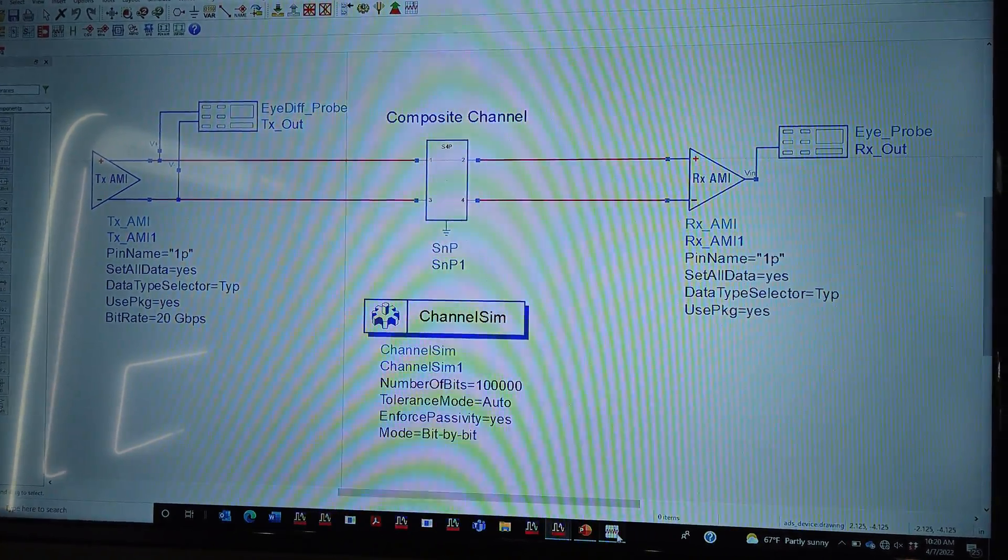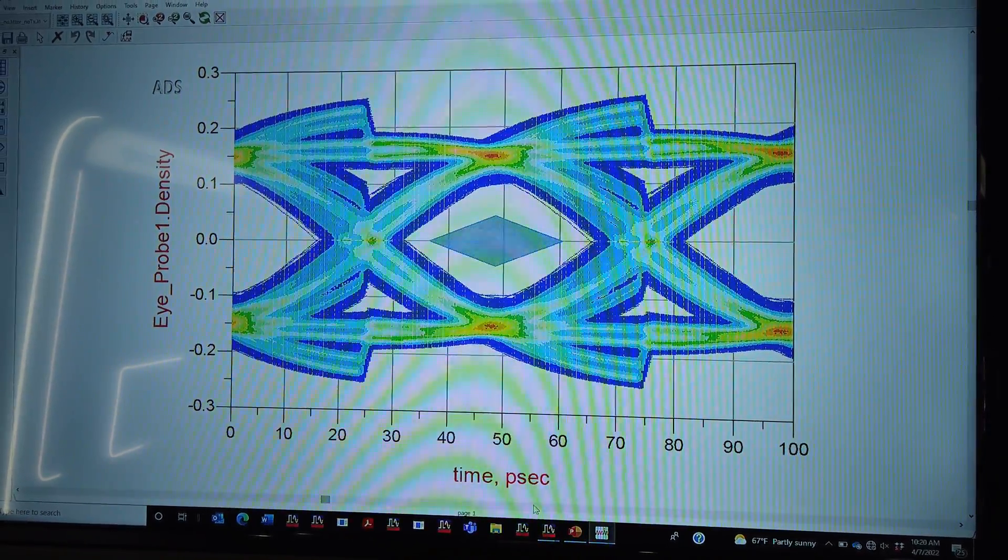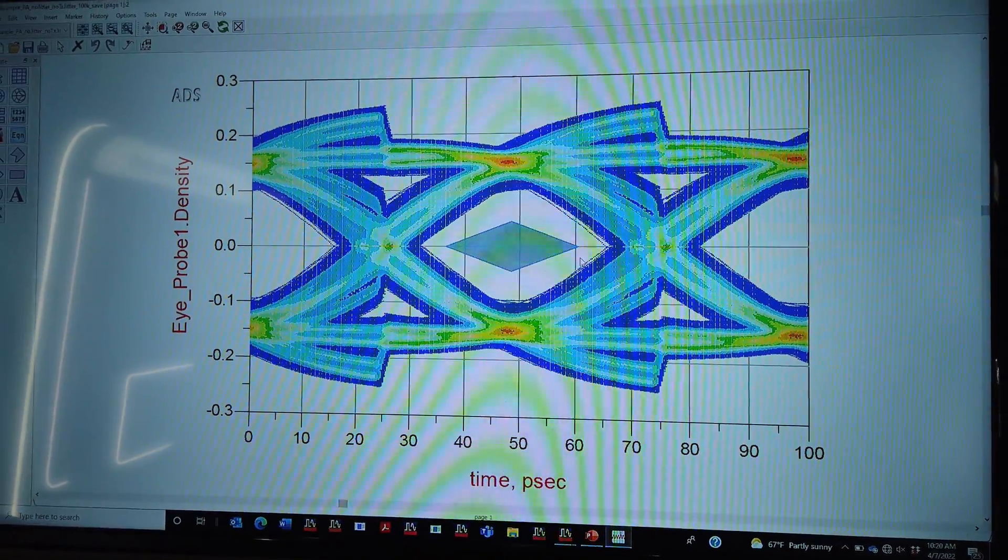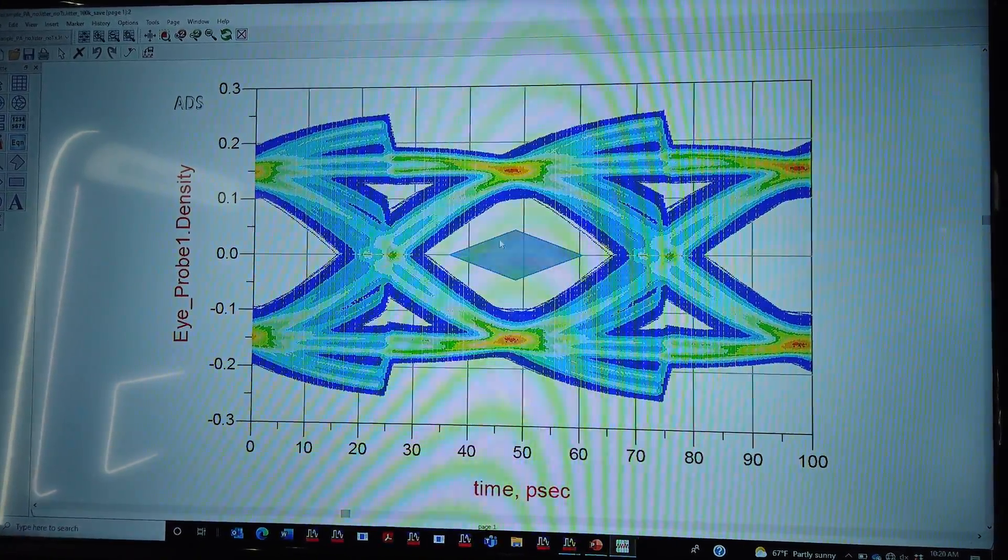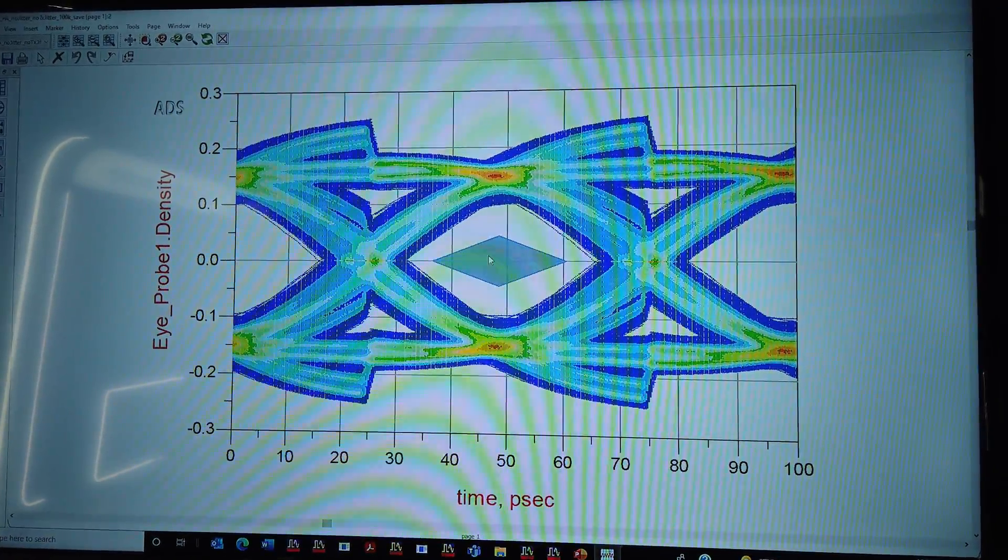And after we complete the simulation, what we're actually getting is an eye that clearly matches the spec. I've superimposed the USB 4 Gen 3 Test Case 3 mask on here. So it's very clear that the eye is passing with flying colors and we're seeing what we're expecting.